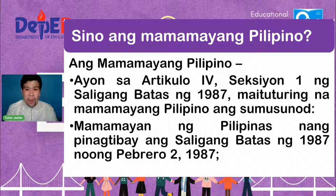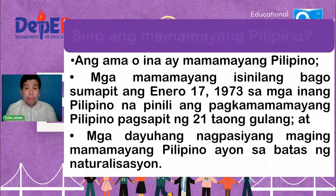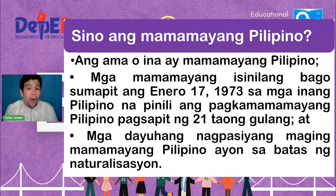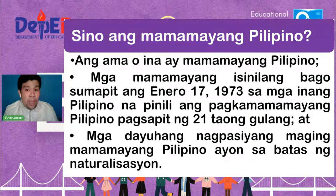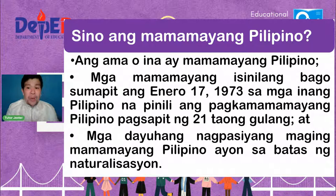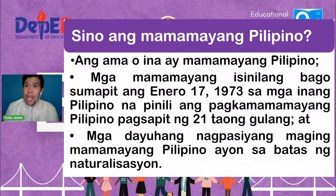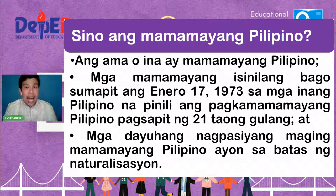Kung ang ama o ina ay mamamayang Pilipino, maaari matawag na Pilipino ang anak. Maaari ding mga mamamayang isinilang bago sumapit ang Enero 17, 1973, sa mga inang Pilipino na pinili ang pagkamamamayang Pilipino pagsapit ng 21 taong gulang. At mga dayuhang nagpasang maging mamamayang Pilipino ayon sa batas ng naturalisasyon. Maaari silang matatawag nating mamamayang Pilipino dahil pinili nila na maging isang mamamayang nagmamahal ng ating bansang Pilipinas.